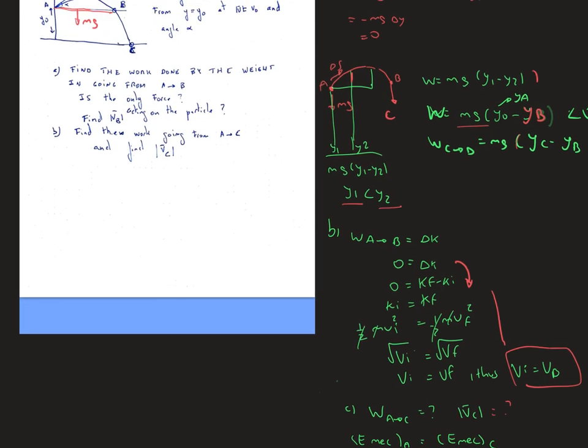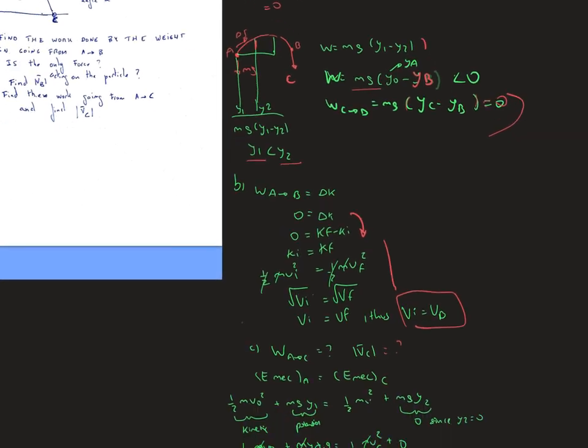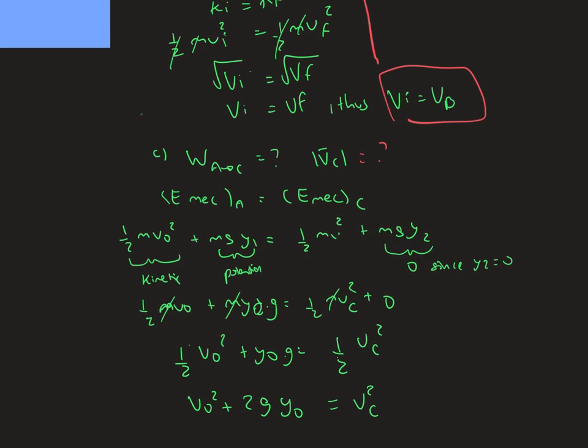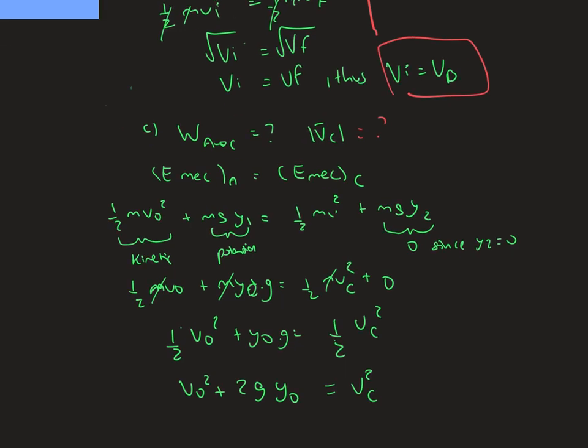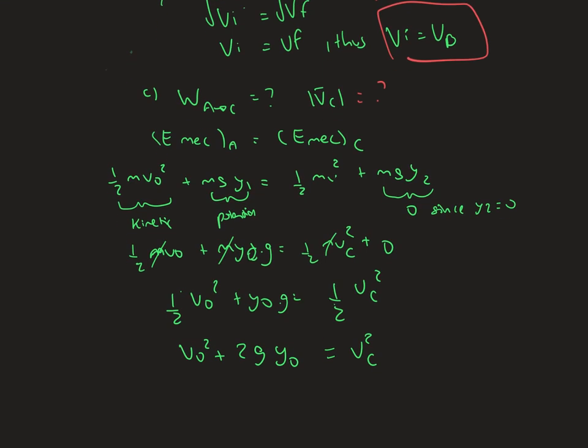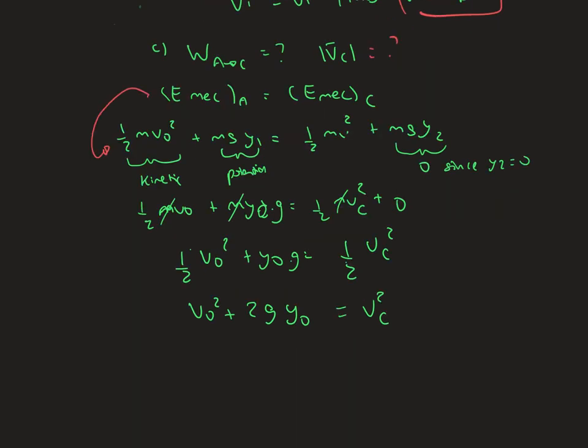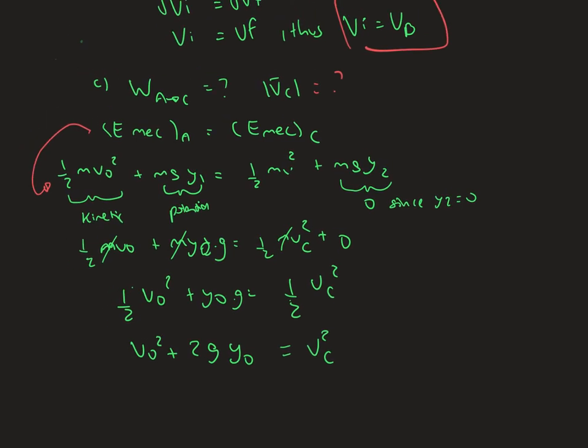To find the work going from point A to C and find the magnitude of velocity C, we could say that the mechanical energy from A is equal to mechanical energy from C. We can rewrite this equation: kinetic plus potential from the initial position is going to be kinetic plus the potential energy in the final position.